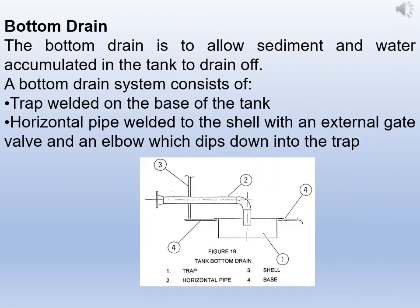The bottom drain is to allow sediments and water accumulated in the tank to drain off. A bottom drain system consists of a trap welded on the base of the tank, a horizontal pipe welded to the shell with an external gate valve, and an elbow which dips into the trap.